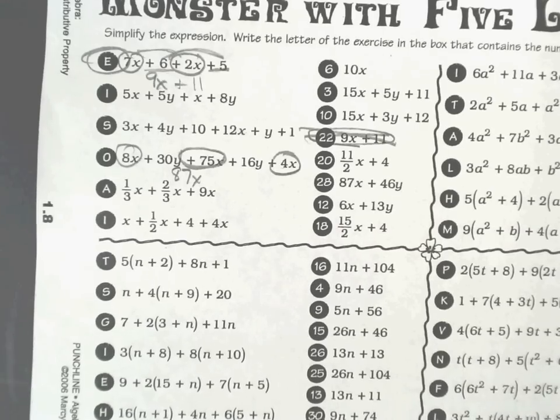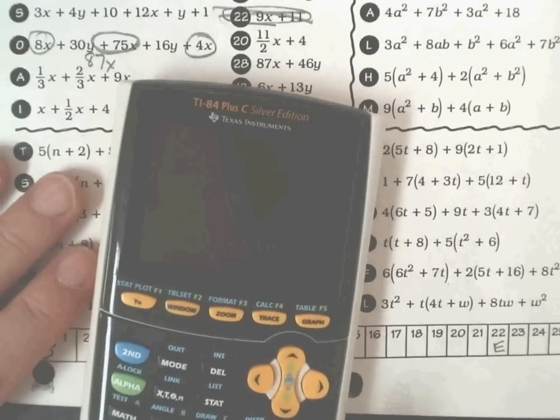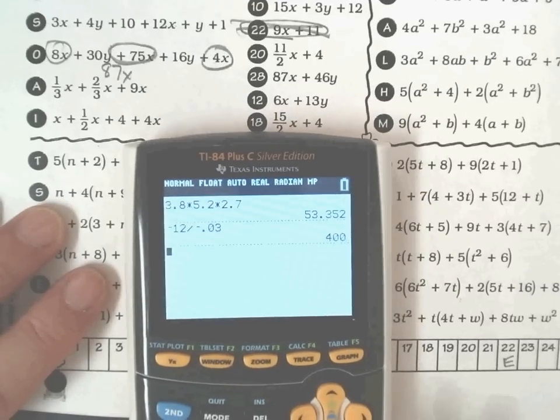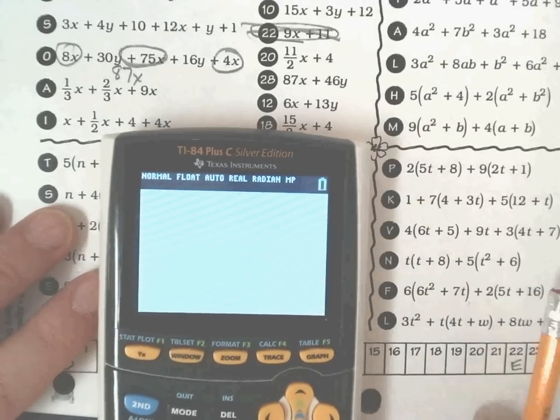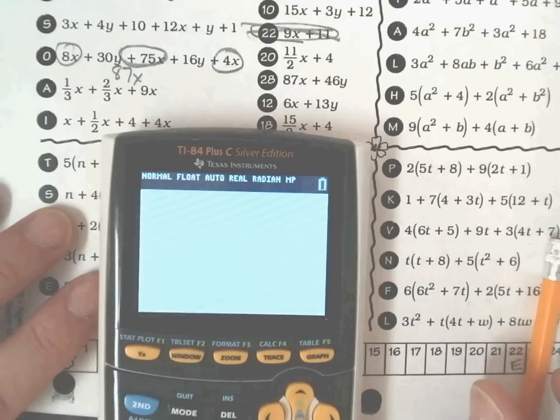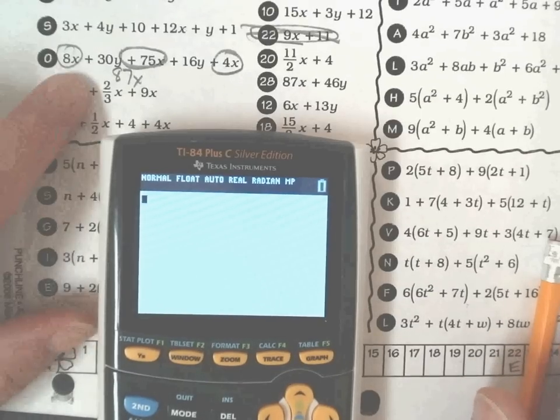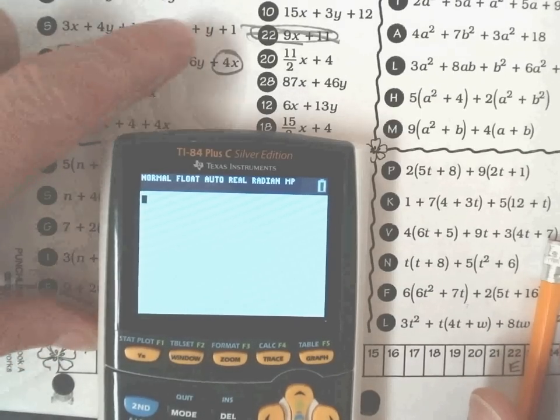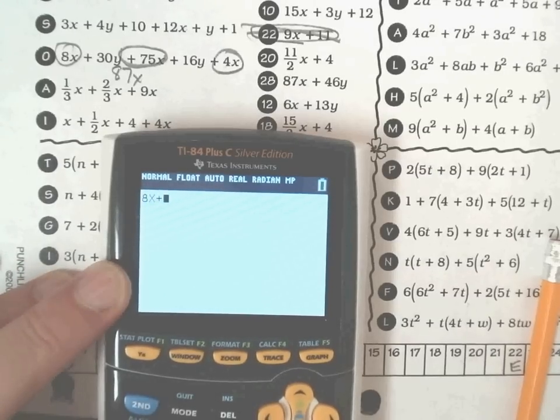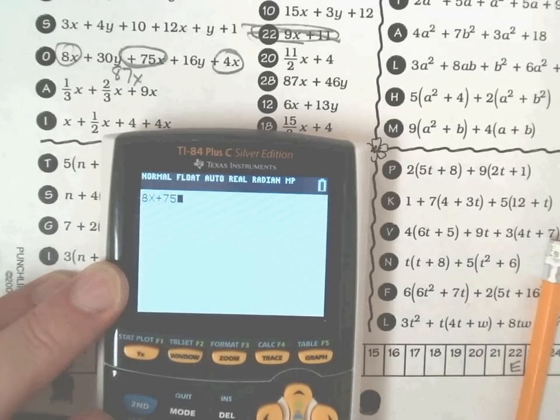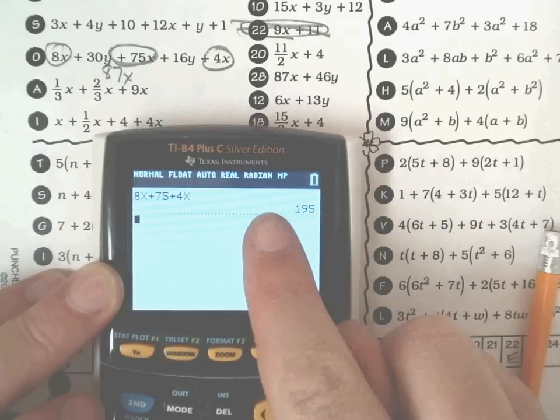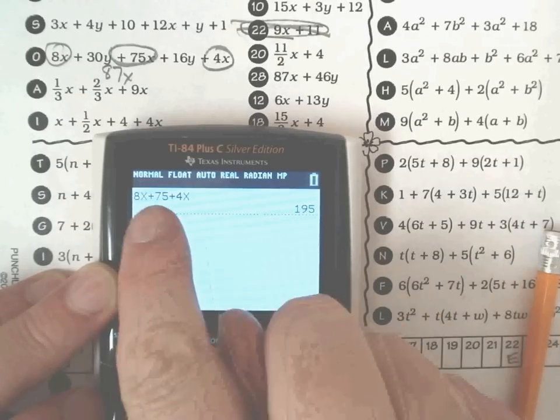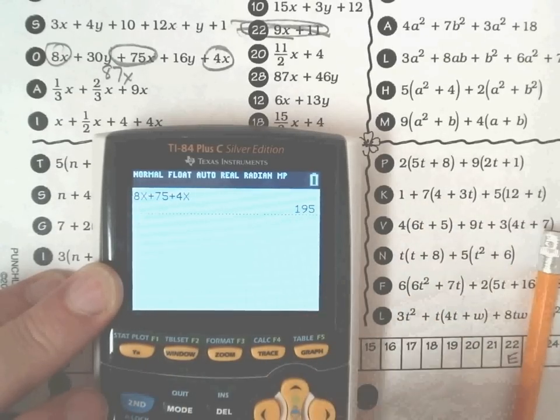You don't have to take my word for it. You can actually do it yourself. Use your calculators. Now remember that on these, you cannot put variables in. You don't want to put in 8x, 75x, and 4x. If you do that, no matter how big the numbers are, you're going to end up getting, oh I put a 75 in there, so that messed that up.